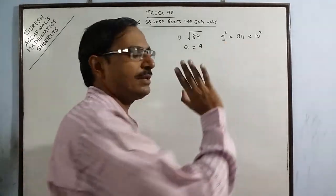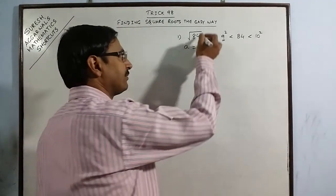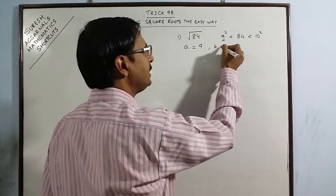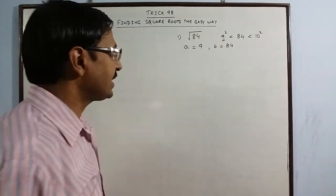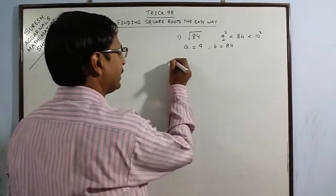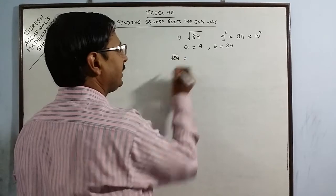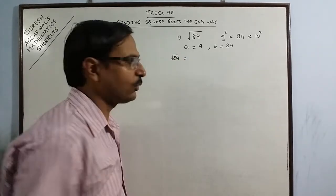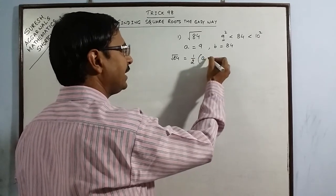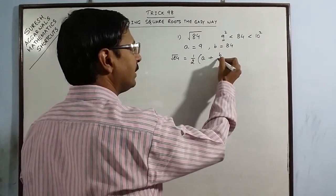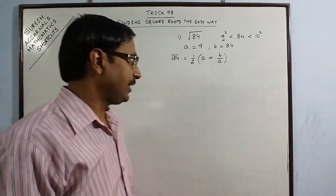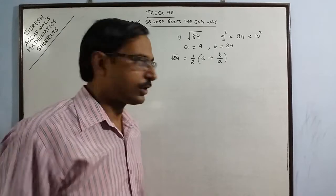So I need to find the value of a first. This is the method for finding the value of a. The number itself which is given in the square root sign, I consider that number as b. So once I have the values of a and b, now the square root of 84, the rough value of square root of 84 can be found out by using the formula: half of a plus b upon a.